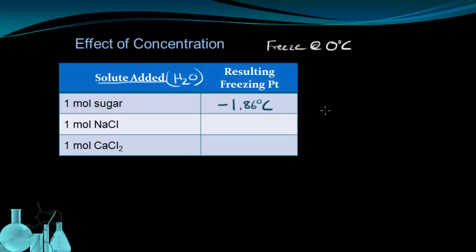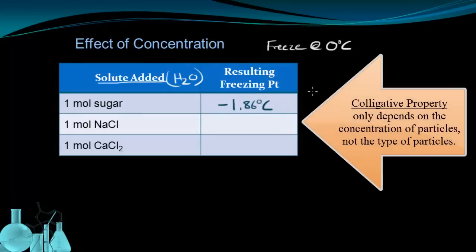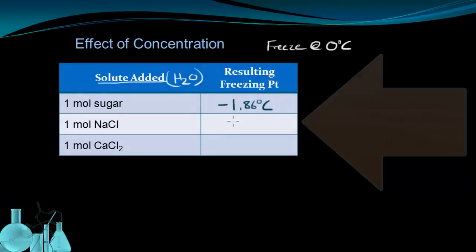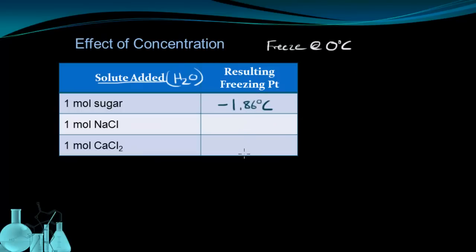So that fits with our expectations. We added solute and the freezing point went down. Now, our definition of a colligative property is something that depends only on the concentration of particles, not on the type of particles. So we should expect to see the same change in freezing point temperature regardless of what the substance is. This shouldn't matter. This shouldn't matter. The only thing that should matter is that we have 1 mole being added. But we're going to see that that's not the case.